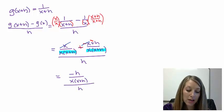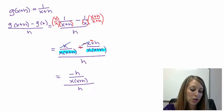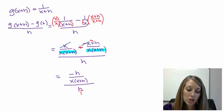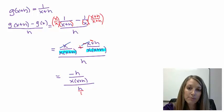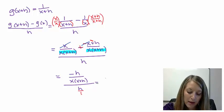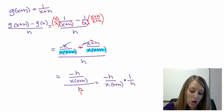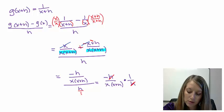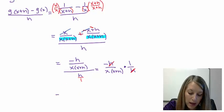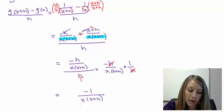So now I have a fraction divided by a fraction. Or at least you can make it that way. So we divide fractions by flipping and multiplying. So I have negative h over x times x plus h times the reciprocal of this denominator here, 1 over h. And so my h over h cancels. So at this point I am left with a negative 1 in the numerator and an x times an x plus h in the denominator.